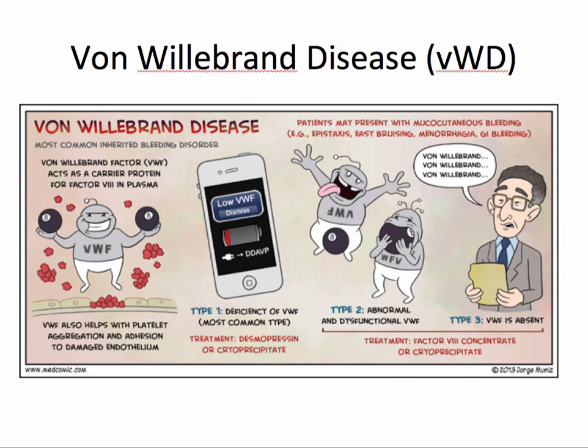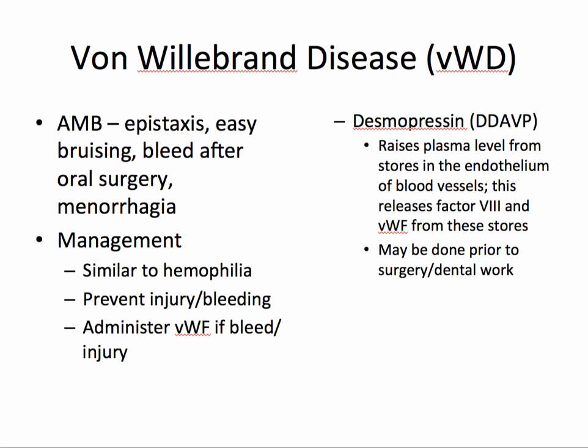Von Willebrand disease, or VWD, is the most common inherited bleeding disorder. Von Willebrand factor acts as a carrier protein for factor VIII in plasma and helps with platelet aggregation and adhesion to damaged endothelium. It is manifested as epistaxis, easy bruising or bleeding after oral surgery, and menorrhagia. Management is similar to hemophilia — prevent injury or bleeding. If there is a bleed or injury, administer von Willebrand factor. Desmopressin or DDAVP raises the plasma level of von Willebrand factor from stores in the endothelium, releasing factor VIII and von Willebrand factor — this may be done prior to surgery or dental work to prevent a bleed.